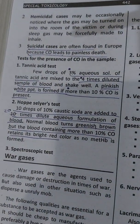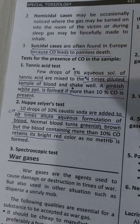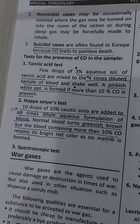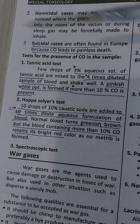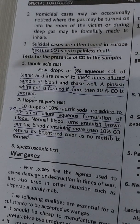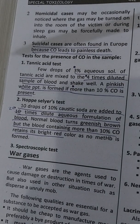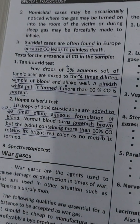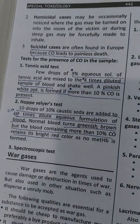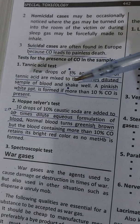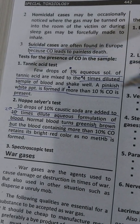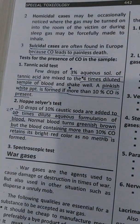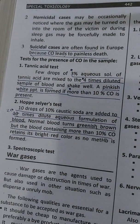To test whether carbon monoxide is present in a sample, one test is the tannic acid test. We dilute the blood sample 4 times and then add a 3% aqueous solution of tannic acid. If the resulting color is pinkish white, then 10% or more carbon monoxide is confirmed present in the sample.